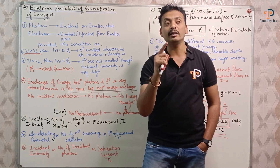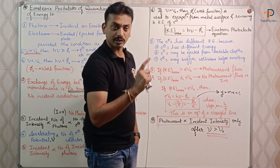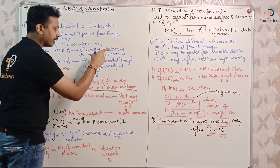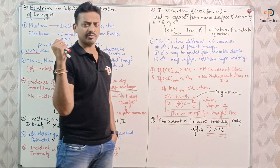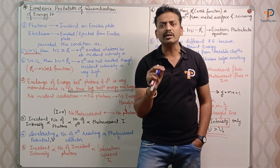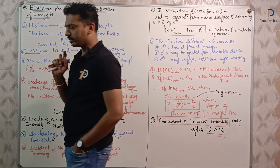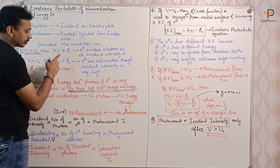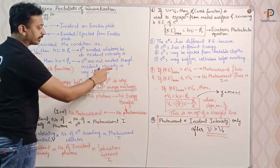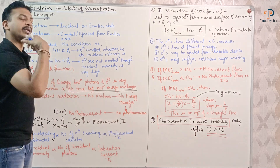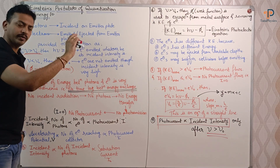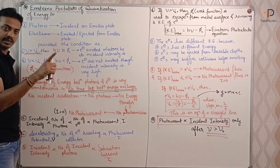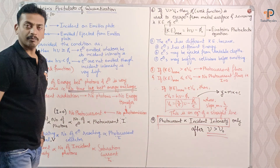The work function is the minimum energy required for electrons to come out from the emitter plate — that is what work function means. So if h·ν ≥ φ₀, then electrons will be emitted, whatever the incident intensity — even if intensity is very low. But if ν < ν₀, then h·ν < φ₀, and electrons are not emitted no matter how high the incident intensity is, because the minimum condition is not satisfied.